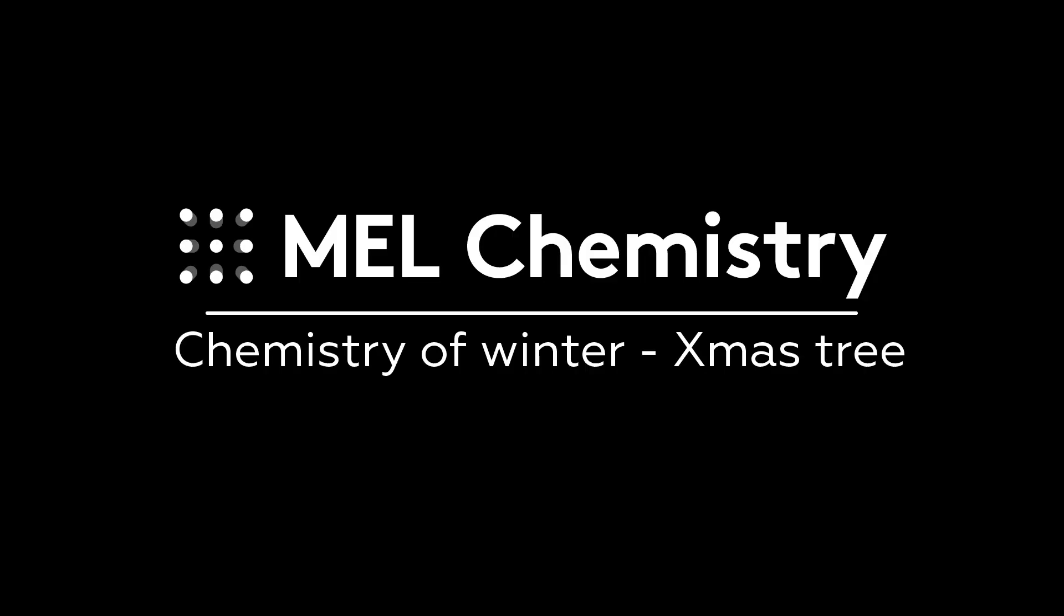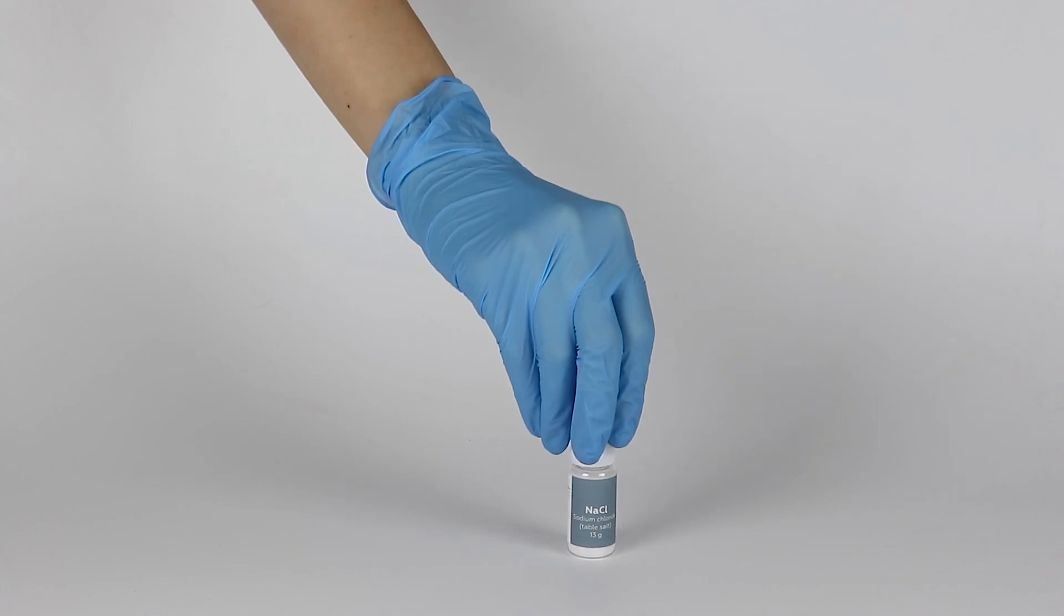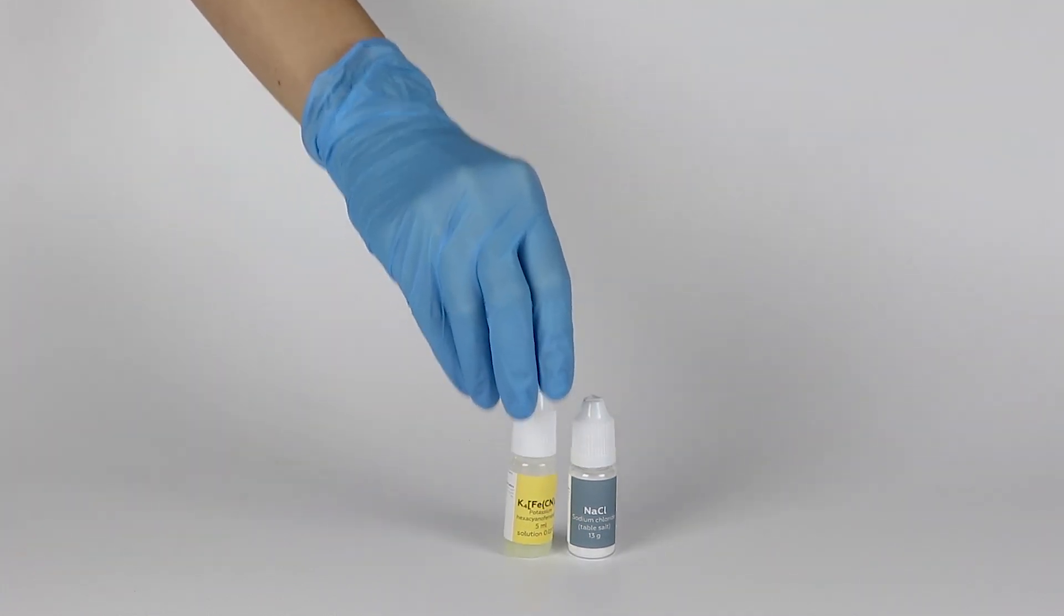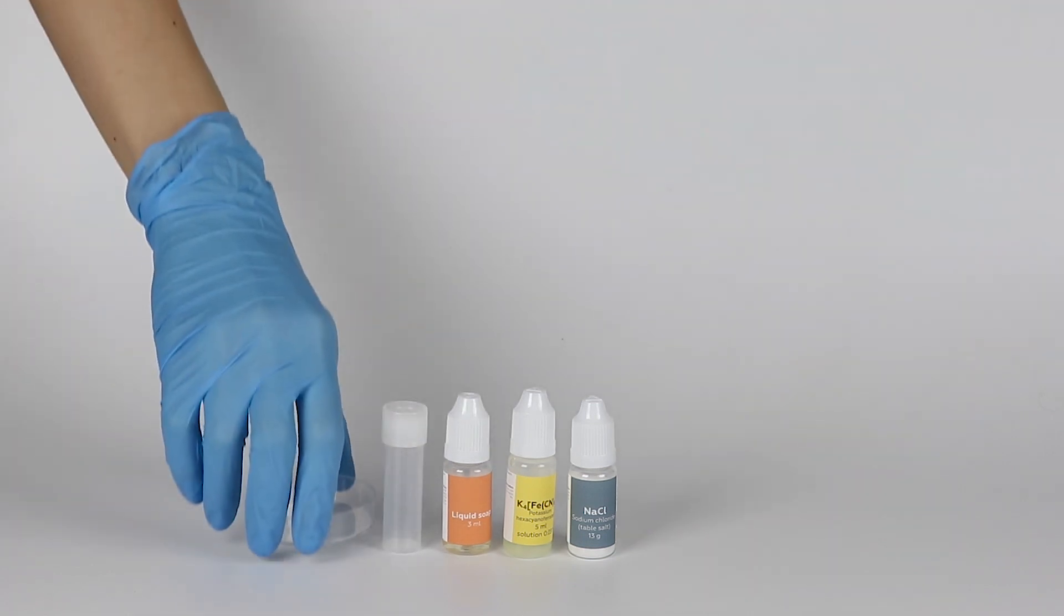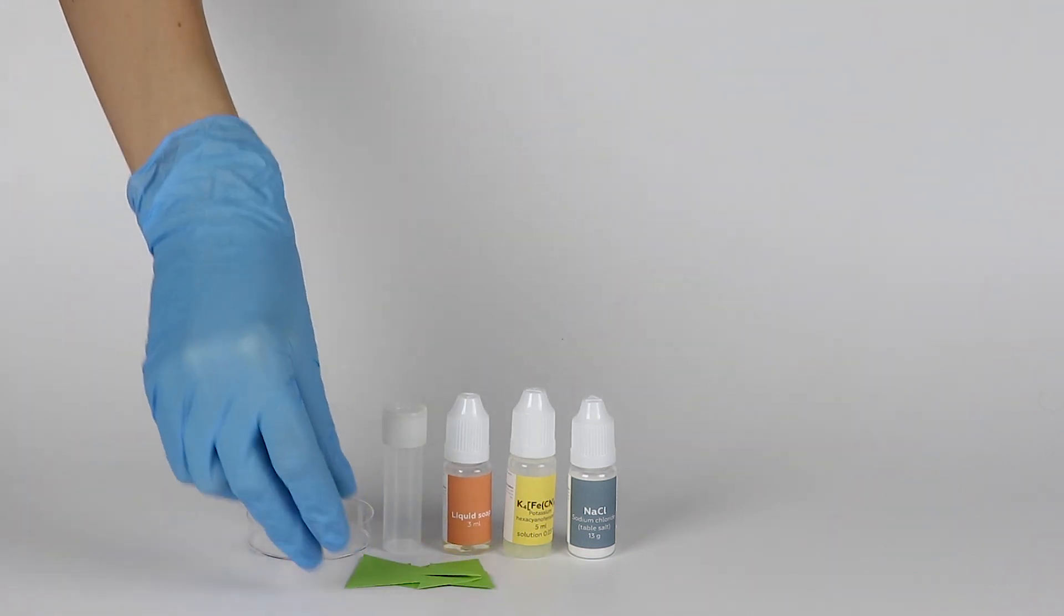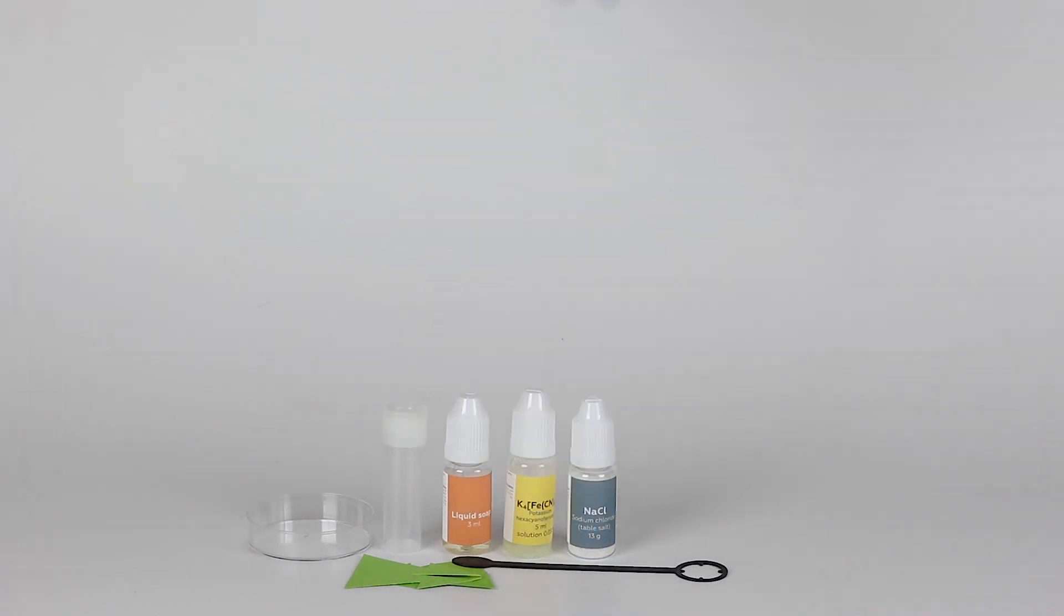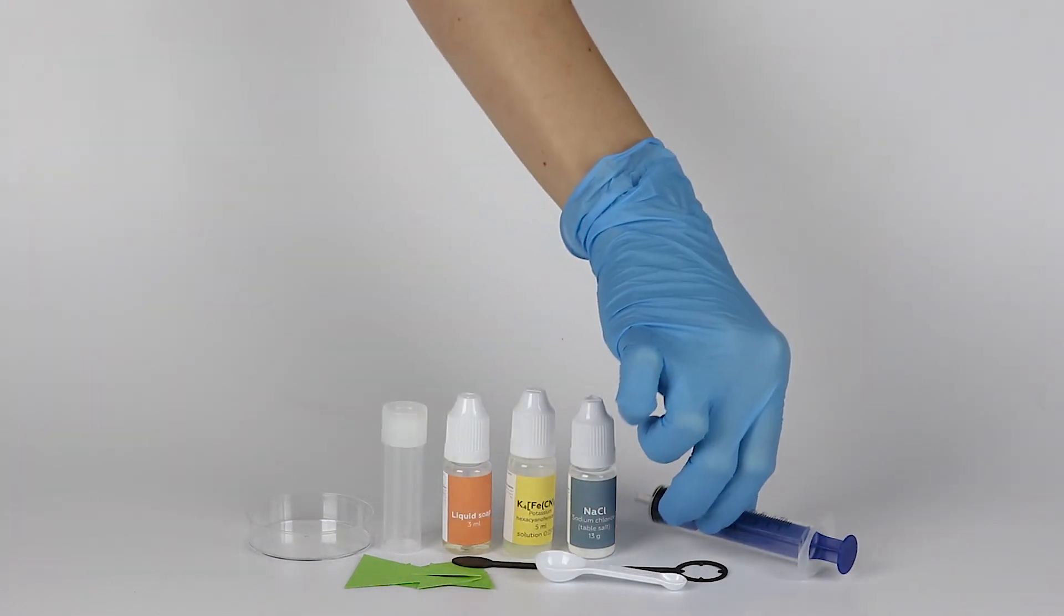For the Christmas tree experiment, you will need sodium chloride, potassium ferrocyanide solution, liquid soap, a plastic vial, a petri dish, a paper template of a Christmas tree, a vial holder, a measuring spoon, and a syringe without a needle.